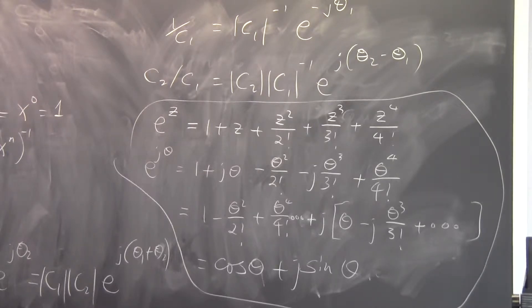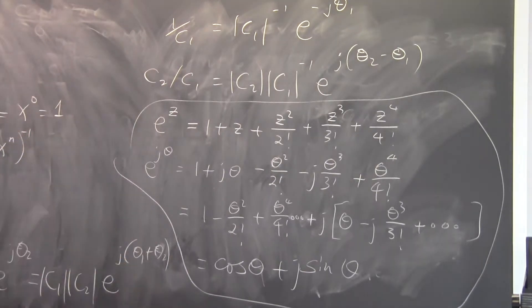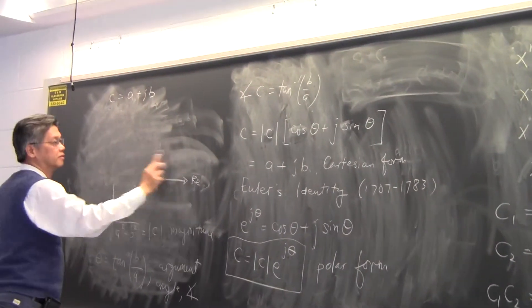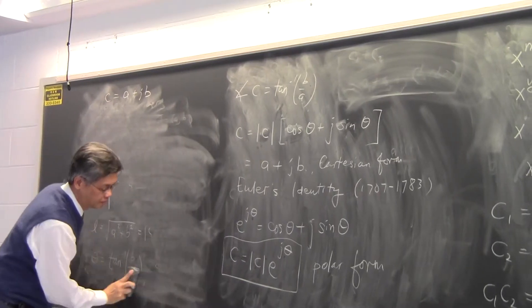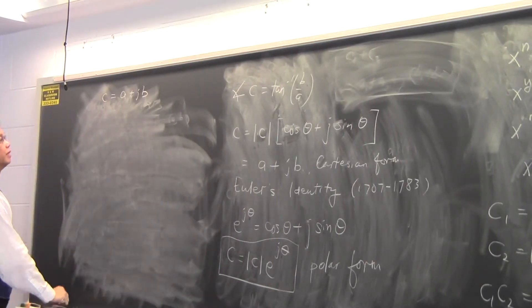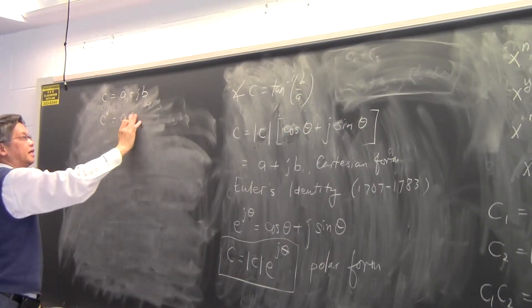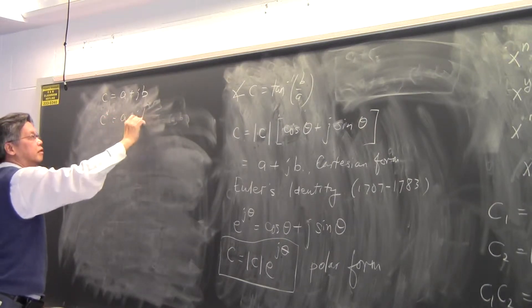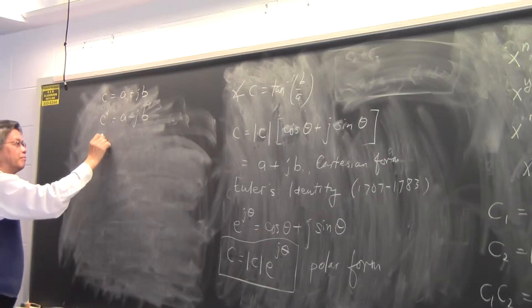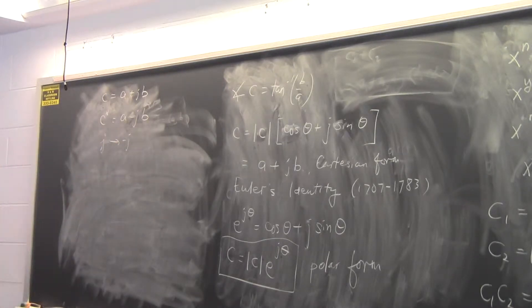So let's talk about complex conjugation. Complex conjugation is a very simple operation. If you have a complex number A plus jB, its complex conjugate is given by A minus jB. The rule is: just replace j with minus j. Very simple — wherever you see j, replace it with minus j.